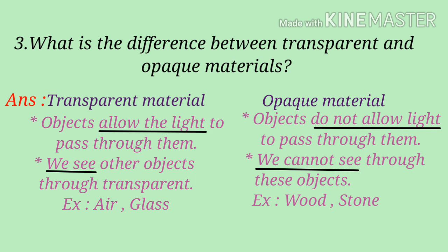Objects allow the light to pass through them — that is transparent. Opaque: objects do not allow light to pass through them. Transparent: allow the light to pass through them. We see other objects through transparent — the opposite side of the material. We see other objects through transparent. Opaque: we cannot see through these objects.